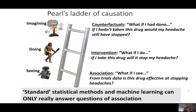Pearl argues that if we rely on statistical machine learning from data, then we can only ever get to level one on this ladder. Getting to both level two and level three requires causal knowledge of the relationships, not just between factors in the datasets, but also including unobserved ones.